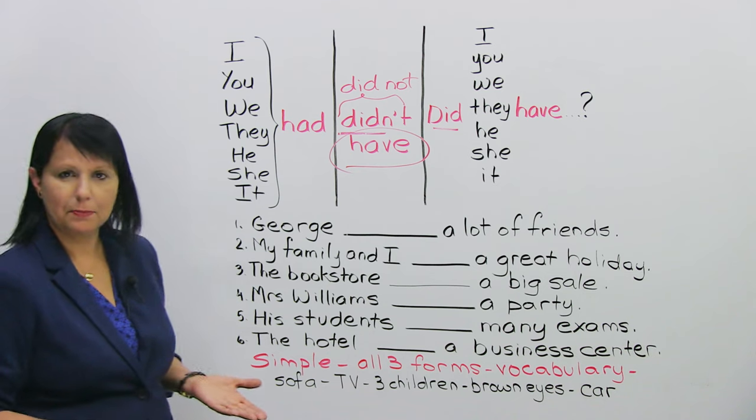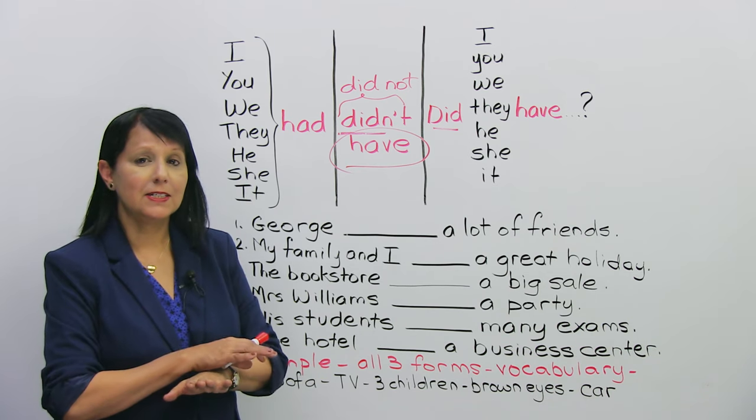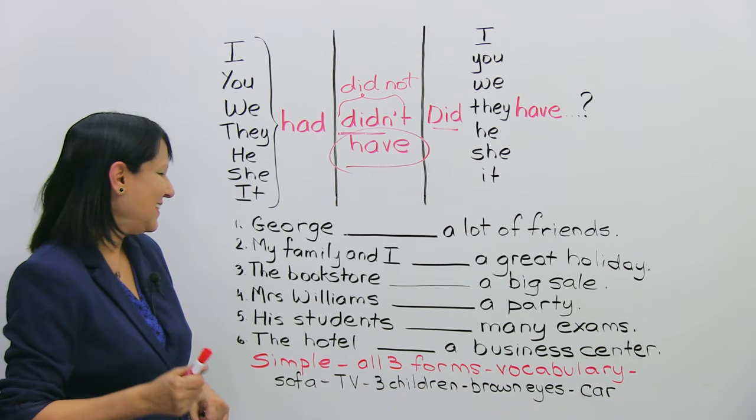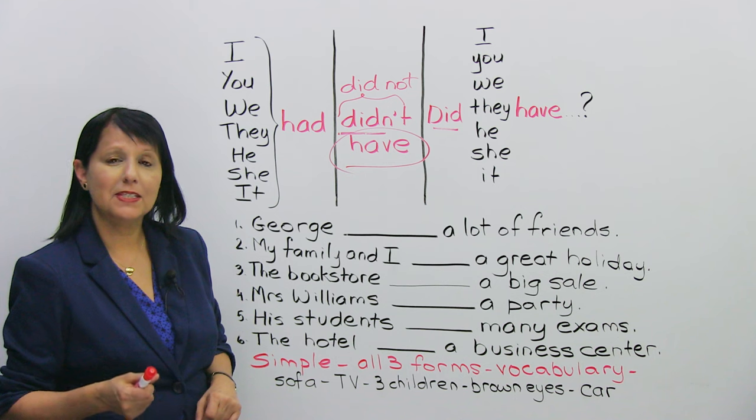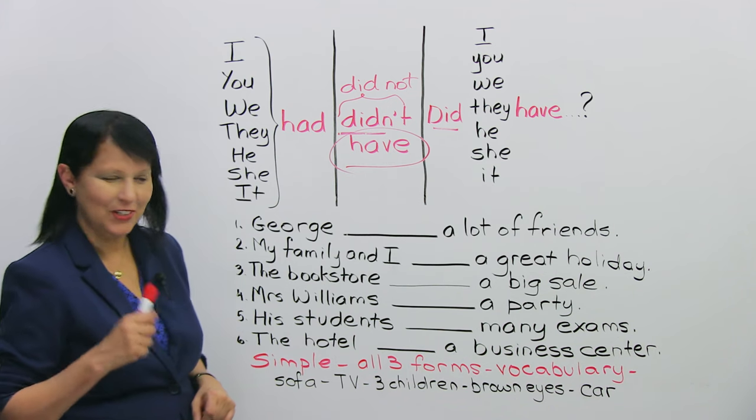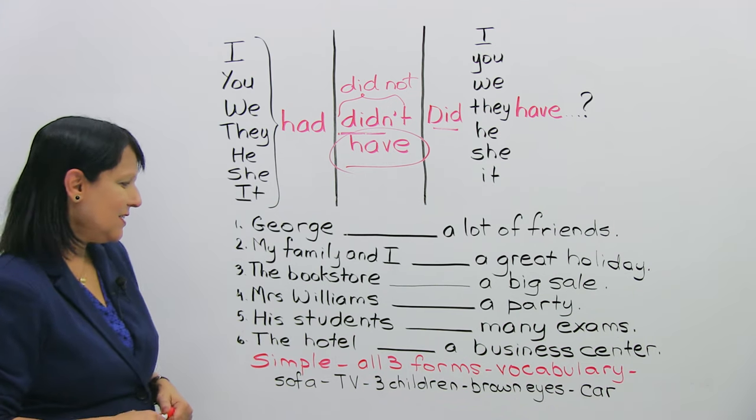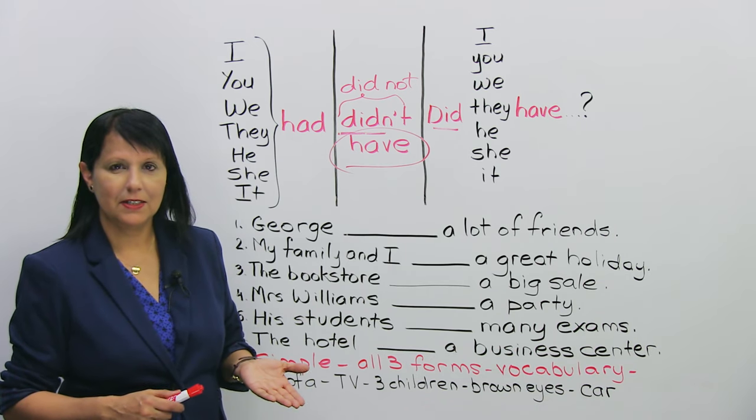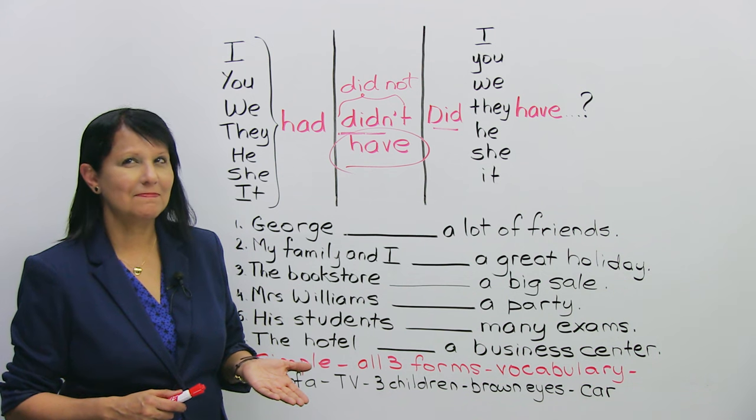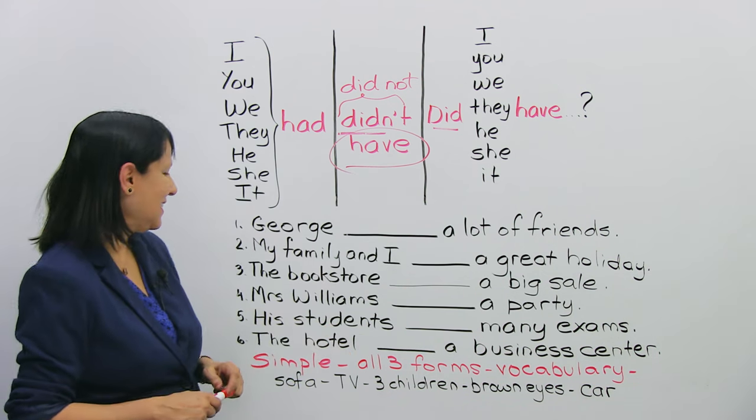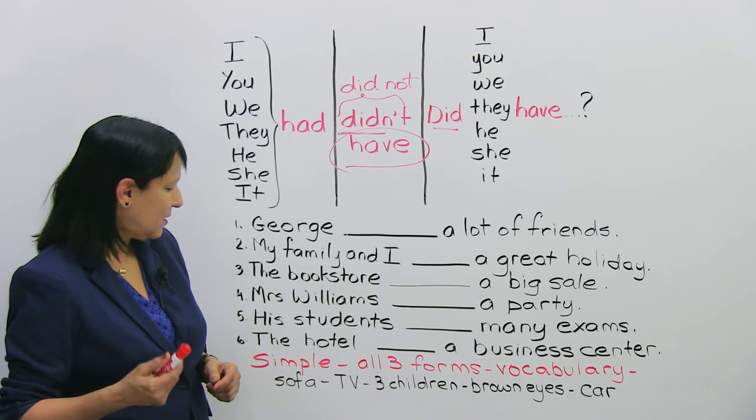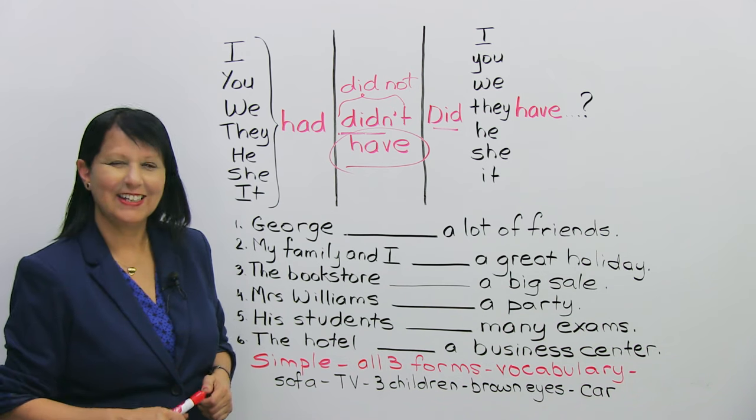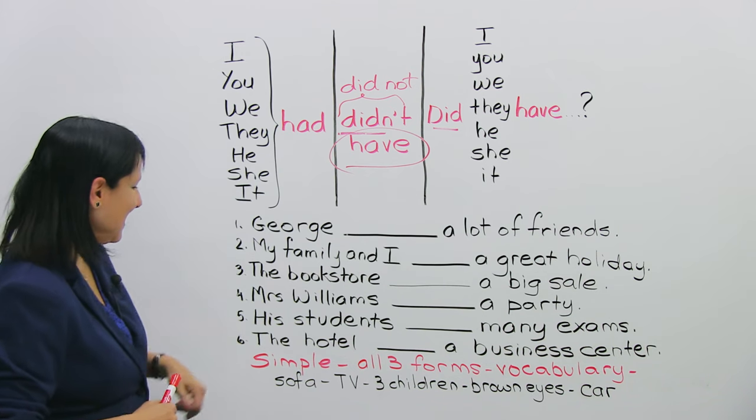Number four. Mrs. Williams had a party. Mrs. Williams didn't have a party. Good. I heard you. Negative. Question. Did Mrs. Williams have a party? Good. Five. His students had many exams. Negative. His students didn't have many exams. Good. And questions. Question. Did his students have many exams? Good. You're getting it.